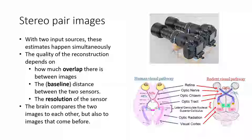We tend to think of the stereo pair as what gives us three-dimensionality, and that's true — two eyes certainly make a big difference. But humans and other animals don't lose their entire ability to make three-dimensional judgments with only one eye. We can make comparisons between sequential images, so if we take two photographs in time and just move between them, that's functionally doing the same thing as having two eyes — so one eye still works fairly well.